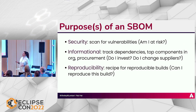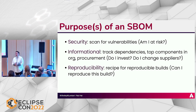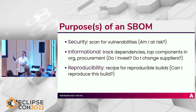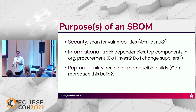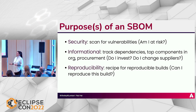The second purpose is informational. You can track dependencies not just to check if they're secure, but also to see — if you're an organization producing lots of different things — what your top three components are. Especially if you're pulling in open source software, maybe you should be investing in that open source project. Or perhaps it's related to procurement: do you need to change suppliers based on what your SBOMs tell you?